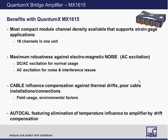The Quantum X 1615 is the most compact module with the highest channel density available in the market that supports strain gauge type applications—16 channels in one unit, with 16 different strain gauges or strain gauge transducers. More importantly, it is designed for applications where you encounter electromagnetic noise or any type of interference, either in the laboratory or out in the field. It uses carrier frequency excitation, more commonly known as AC excitation, to tackle noise and interference issues.